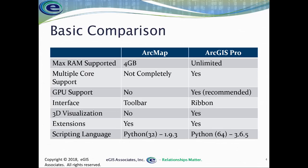ArcMap does not allow you to visualize in 3D, whereas ArcGIS Pro does — right out of the box, you can create 3D scenes without any extensions. To do 3D in ArcMap, you need the 3D Analyst extension and then use ArcScene or ArcGlobe as separate applications. ArcGIS Pro allows that out of the box, which is part of the reason it's so graphics-intensive. Both applications still have extensions — 3D Analyst, Geostatistical Analyst, Spatial Analyst, Network Analyst — and they do basically the same things in both.